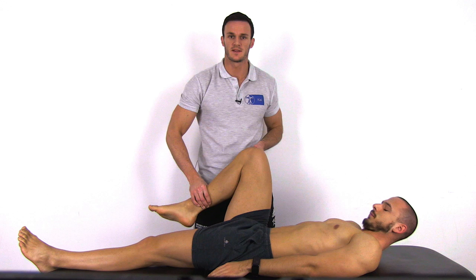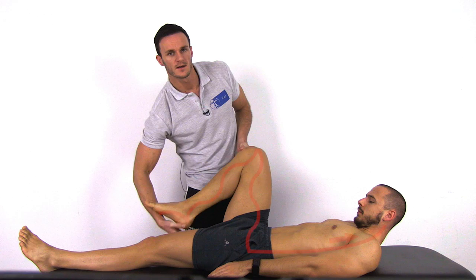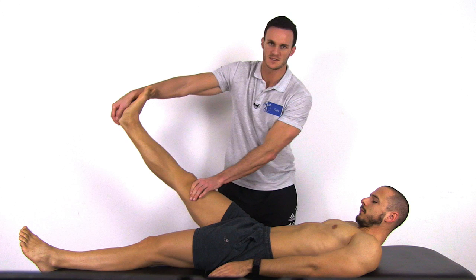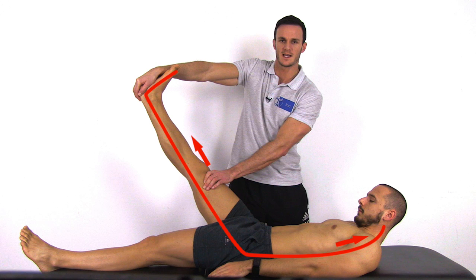Afterwards, dorsiflex the ankle and extend the leg. Then, passively flex the hip while maintaining knee extension. This movement creates maximal tension, while this time the distal movement of the dura is limited by the cranial pretensioning.